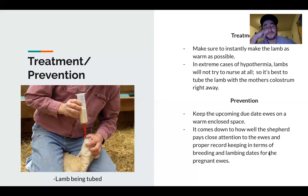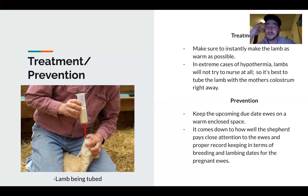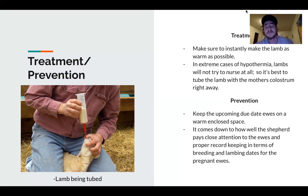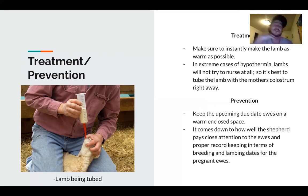There are a few methods for treatment and a few methods for prevention. In terms of treatment, shepherds need to make sure that instantly the lamb is as warm as possible. In most cases of hypothermia, lambs will try to not nurse at all, so it's best to tube the lamb with the mother's colostrum right away — making sure we get that passive immunity up as soon as possible. For prevention, that's a really good way of making sure you don't have to deal with hypothermia and hypothermia death rates in general.